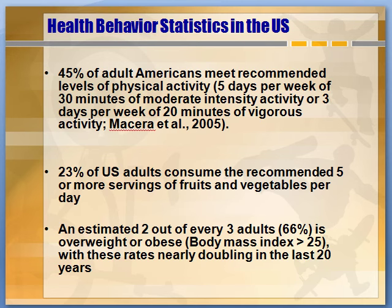We do even worse with fruits and vegetables — only about one-fourth of the adult population consumes five or more servings of fruits and vegetables. In terms of obesity, about two out of every three people in the country is overweight or obese, and about 25 to 30% of that 66% is obesity. Being overweight is basically within 25 pounds of what you're expected to weigh, and there haven't been a lot of good studies showing that causes death. But with obesity, it's basically a comorbid condition with almost every chronic health problem.